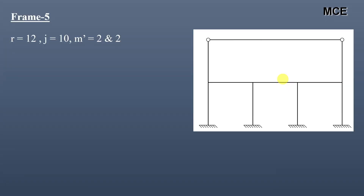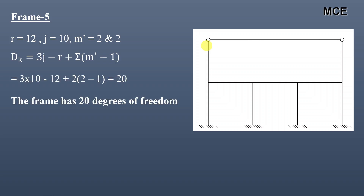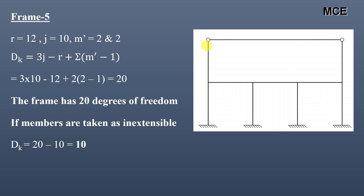For frame 5, this frame has 12 reactions, 10 joints, and 2 internal hinges. At both internal hinges, the number of members meeting is 2, so m′ = 2 and 2. The value of DK is equal to 20, meaning this frame has 20 degrees of freedom. If members are taken as inextensible, this frame has 10 members, so DK = 20 − 10 = 10.